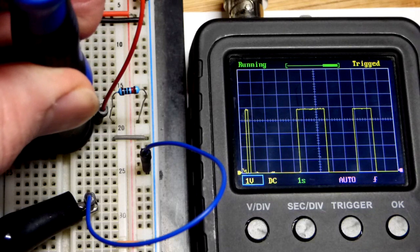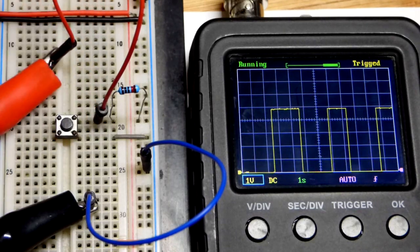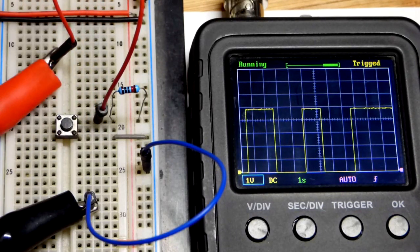But for now we're looking at the pull-up and pull-down. So it's pulling the voltage up to 5 unless I press the button, which it goes to 0.